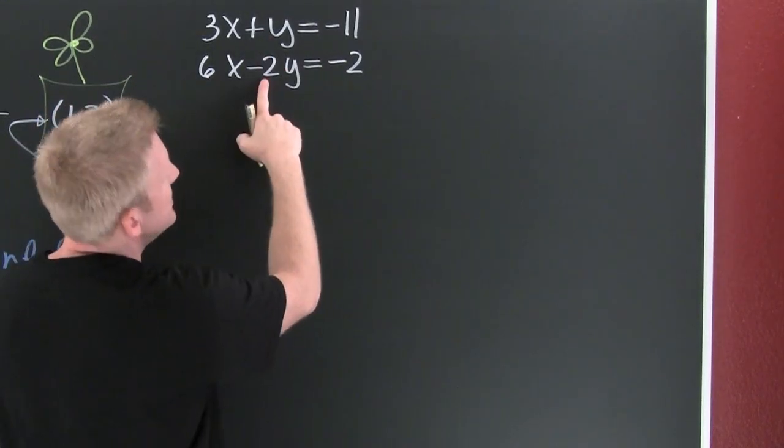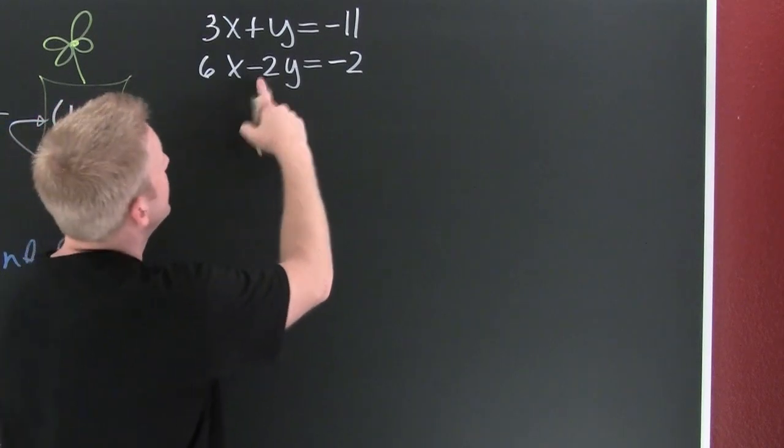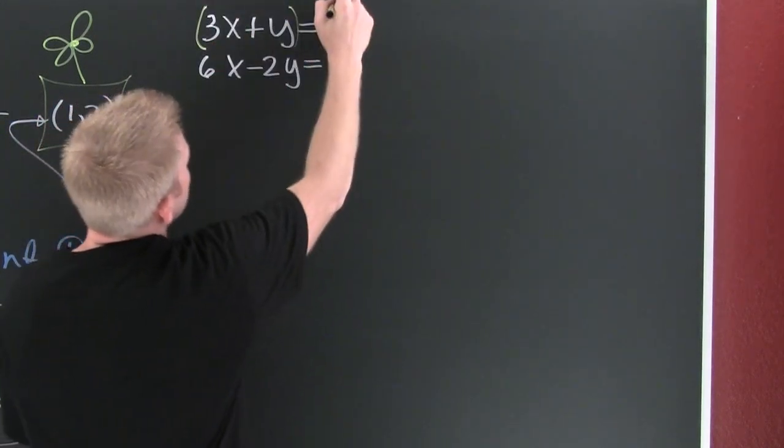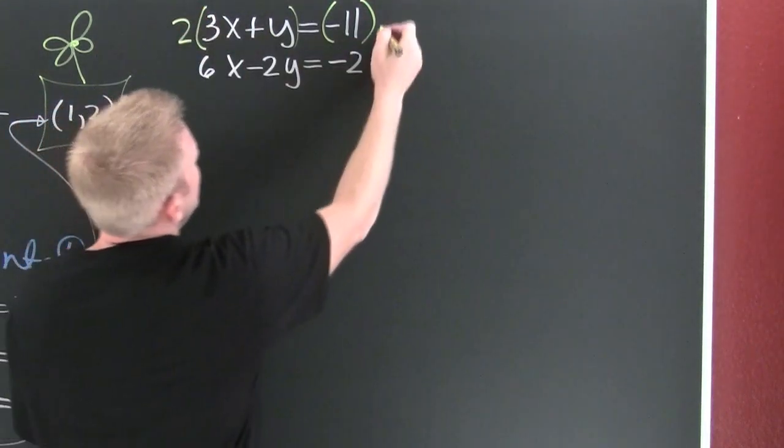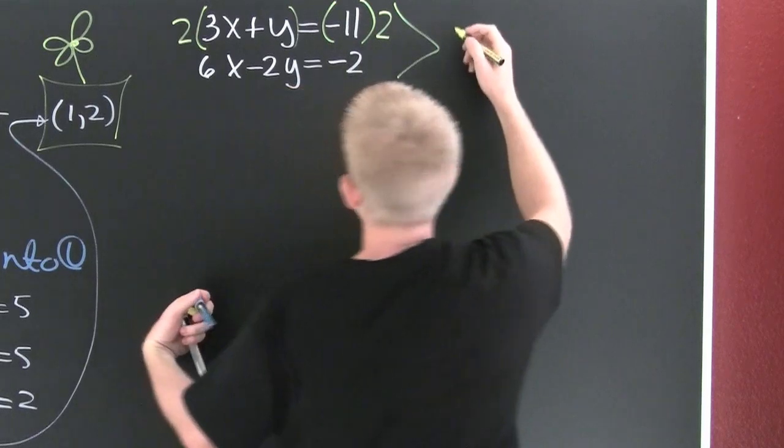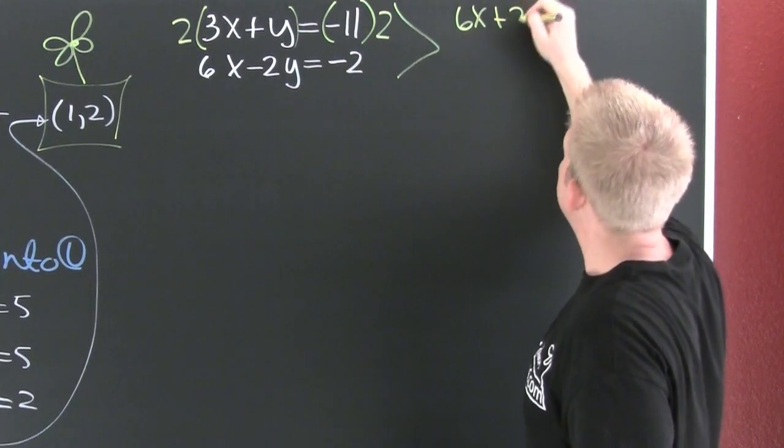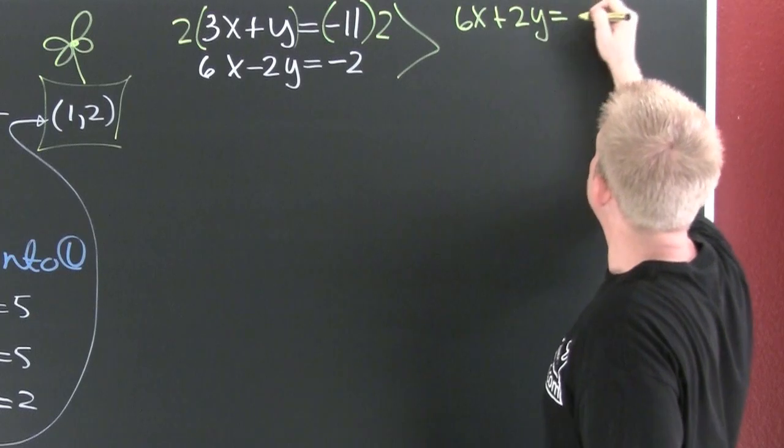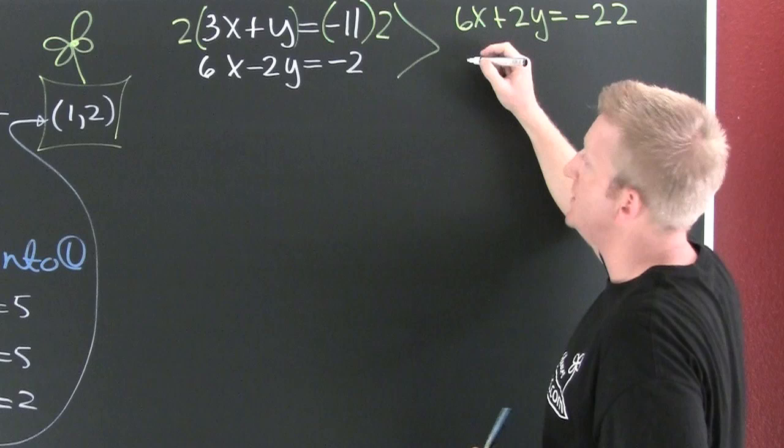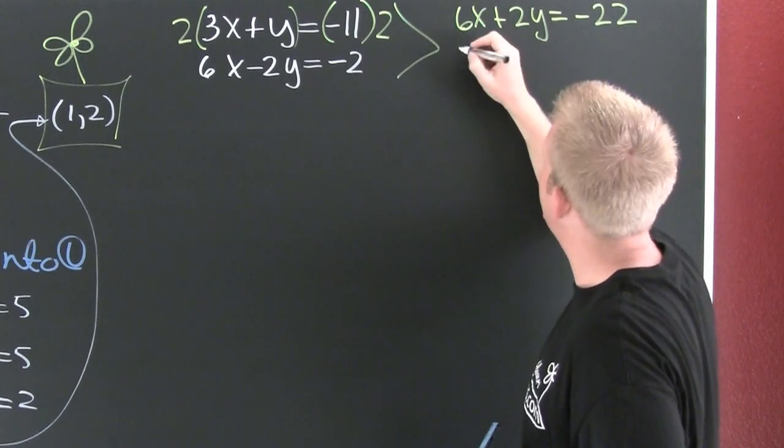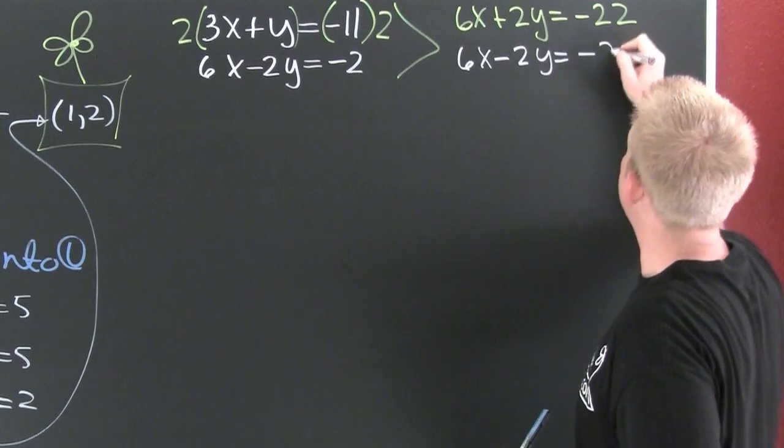So how am I going to get that to be a two? Because I want it to be additive inverses. That means the same number, opposite signs. What you do on to one side, you must also do on to the other. I want to multiply this side by two, and this side by two. And when I do, I'm going to get 6x plus 2y is a minus 22. What did I do to these second equations? I didn't do a dang thing. That's going to be 6x minus 2y is a minus 2.